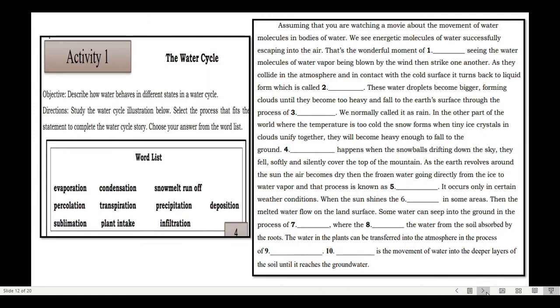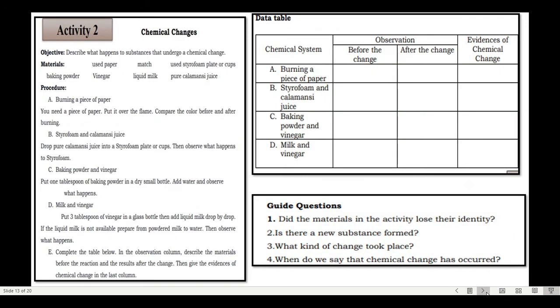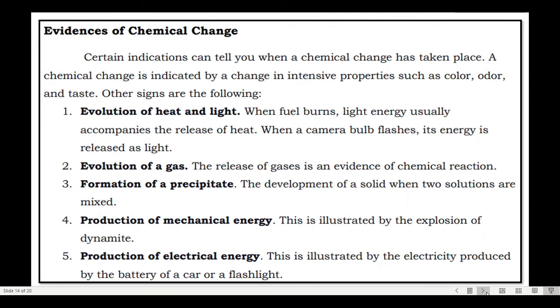After understanding and analyzing the illustration of the water cycle, you may now answer Activity 1. There is a word bank provided — fill in the paragraph with the correct answers. For Activity 2, this covers chemical changes — follow the data in the table, then answer the table itself and the guide questions. For the evidences of chemical change, there are five of them.